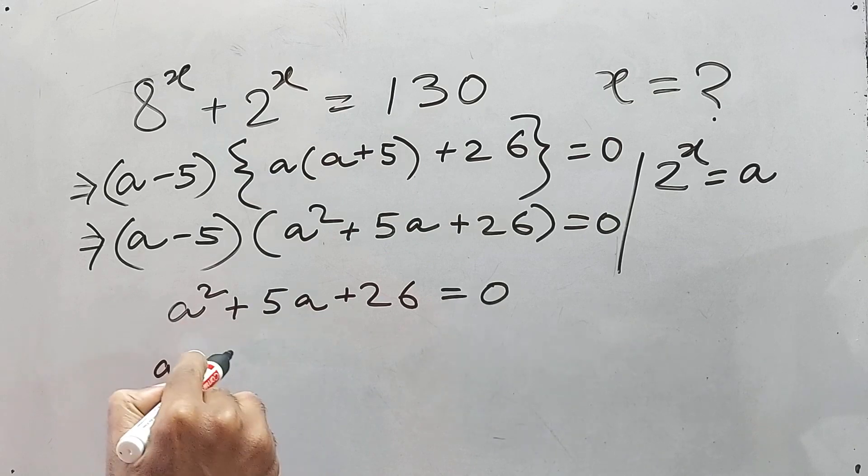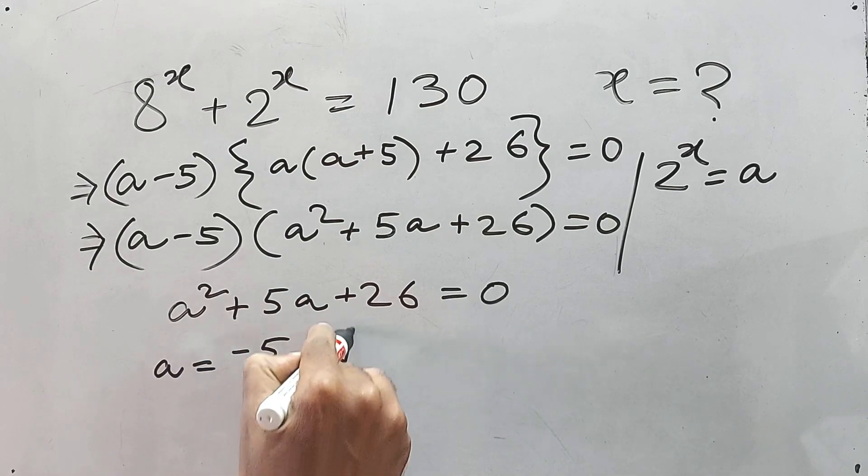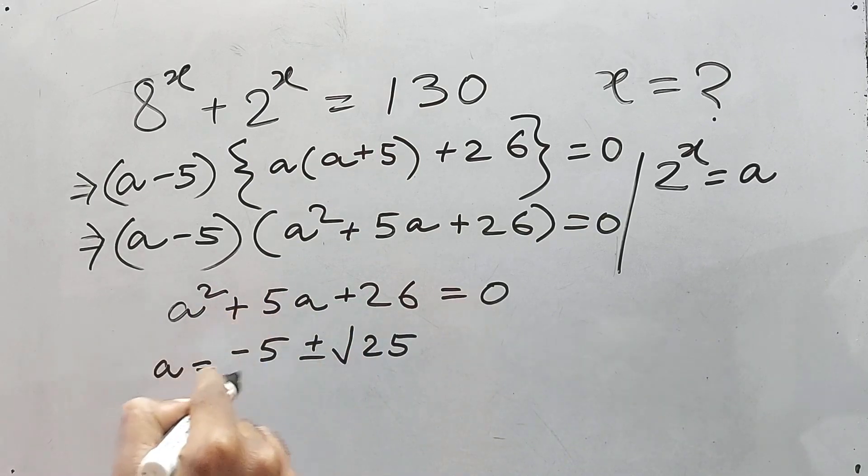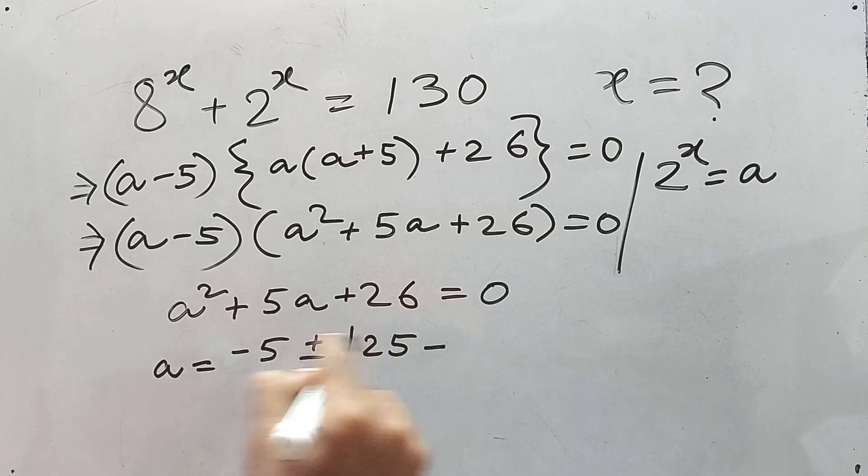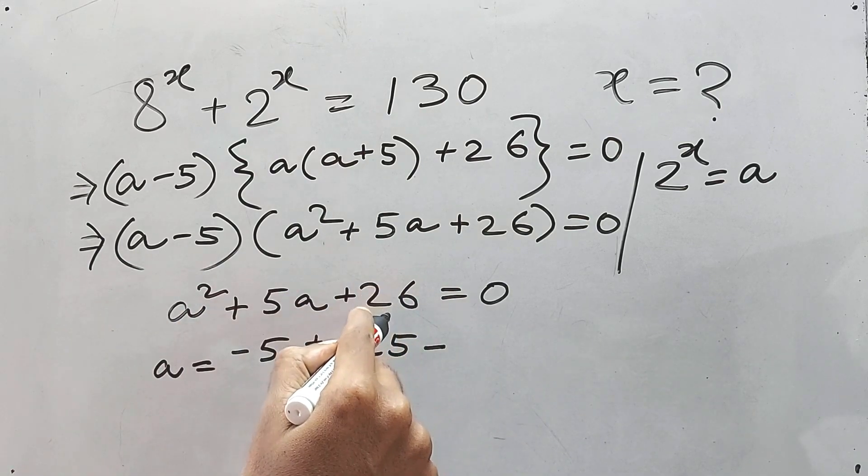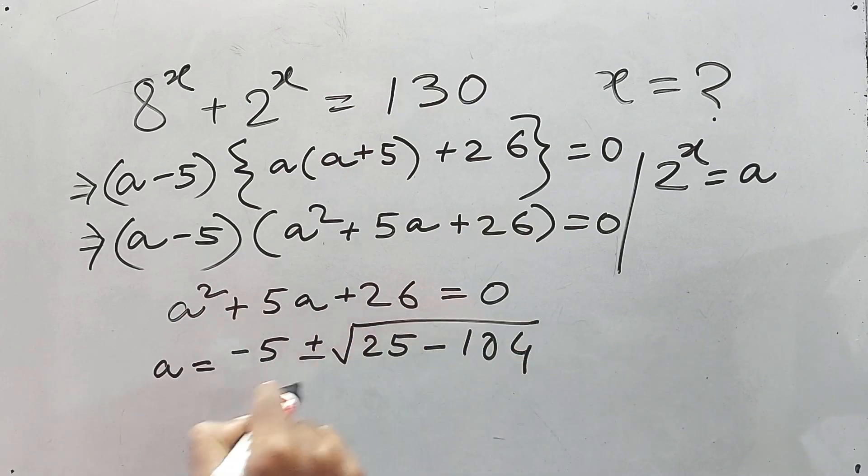That is equal to minus 5 plus minus square root of 25, 5 square, right? This problem is 4ac. 4ac means 4 into 26, that is 104, by 2, right?